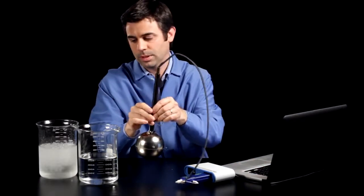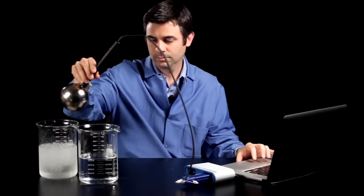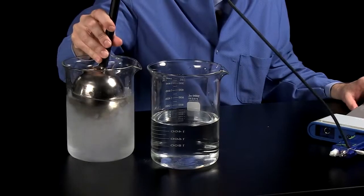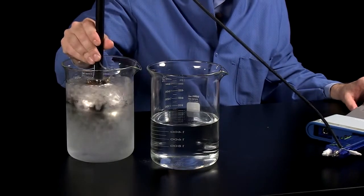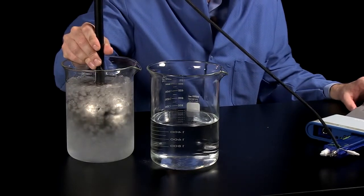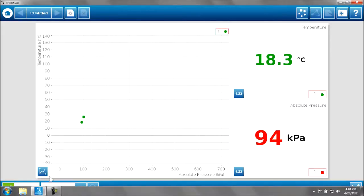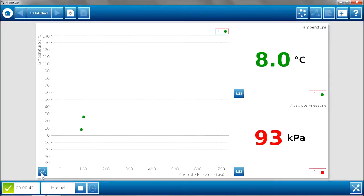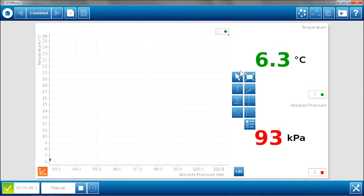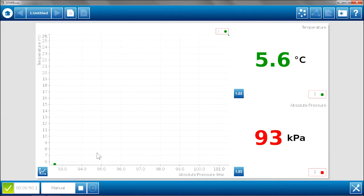Now I am going to put this into my cold bath. I want to make sure it is completely submerged. So we can see the temperature and pressure are both dropping. Automatically we can talk about that relationship. I am going to auto scale this graph. My first point is up here, and my second point is down here.